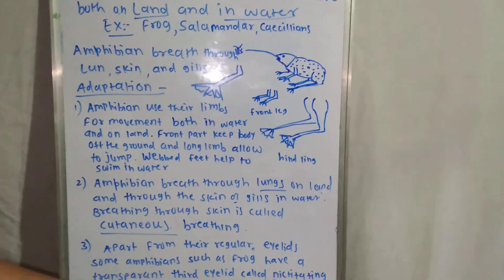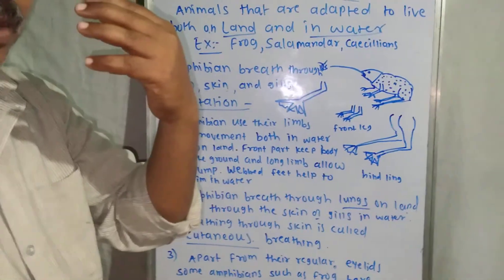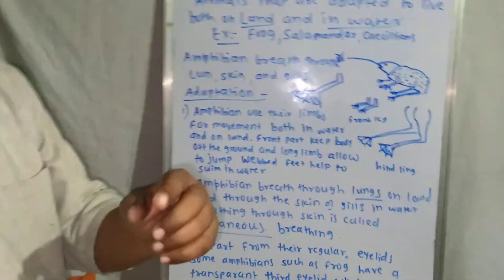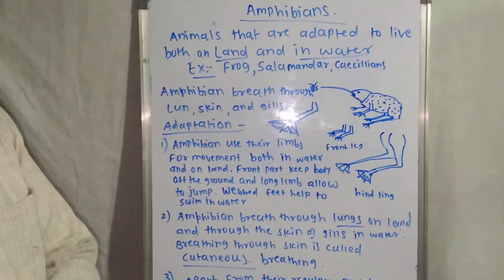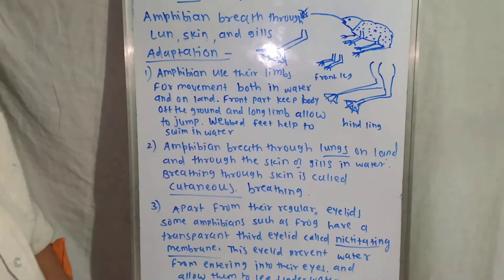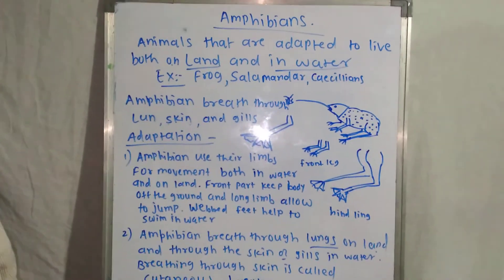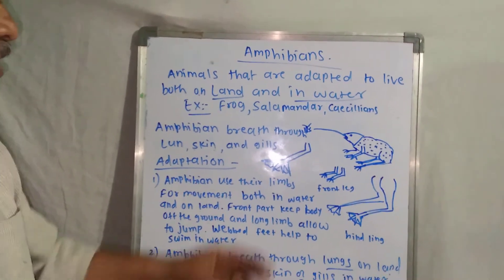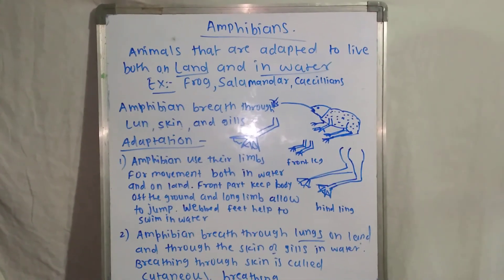Due to the nictitating membrane, water does not enter inside their eyes. Since the eyelid is transparent, the frog can easily see inside the water, and their eyes are also protected by this third transparent membrane. In this way, the frog shows adaptations and can easily live on land as well as inside the water.